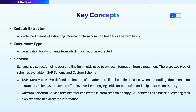Schema is a collection of header or line item attributes which are used to extract information. There are two types of schemas covered in this service. The first one is SAP Schema, which is a predefined collection of fields mostly focused on business documents — for example, invoice, purchase order, etc. — so that end users do not need to define schemas manually. The second one is a custom schema, which is a user-defined collection of fields you would like to extract from the document.